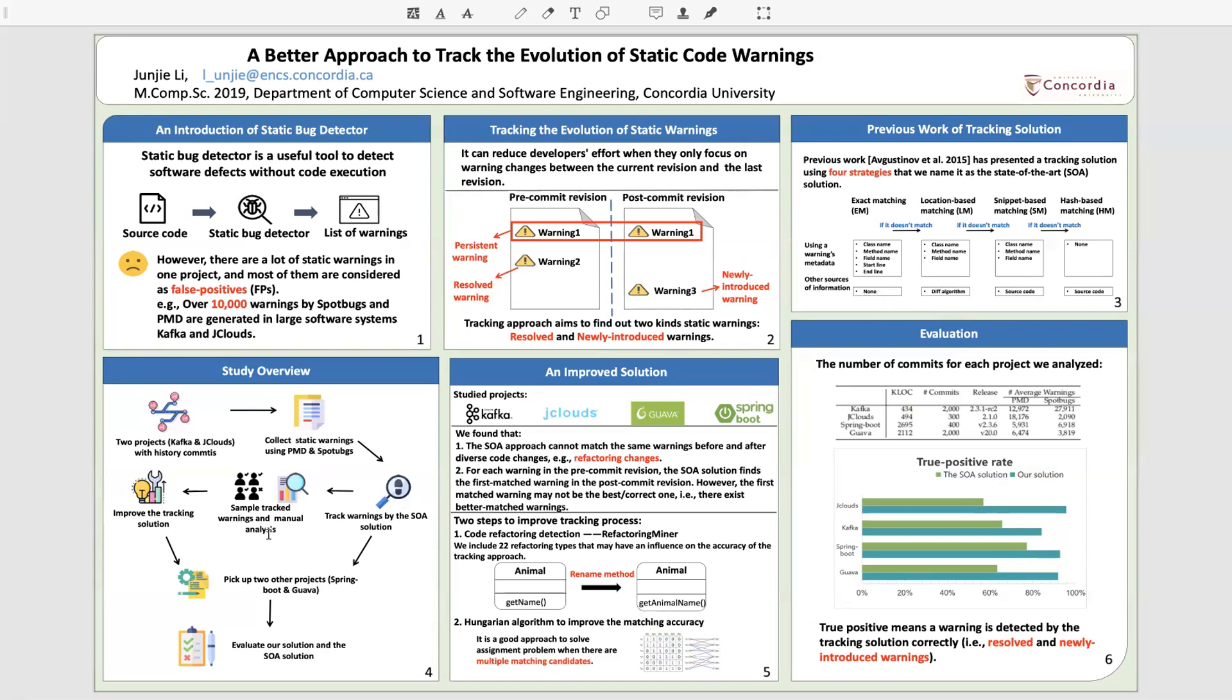Page four shows an overview of our study. We first run two static bug detectors on two open-source projects. We used the state-of-the-art approach to track the reported warnings in commit history and took a statistically significant sample of the tracked warnings and performed manual analysis to uncover the inaccuracies.